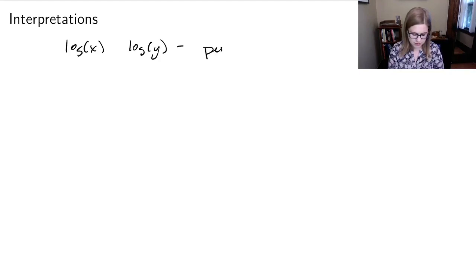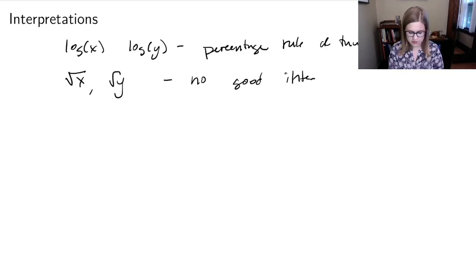So if you have a log of x or log of y, you can use the percentage rule of thumb. But if you have like square root of x or square root of y, there's no good interpretation. It becomes less easy to explain to someone. And if you do x squared or x cubed, anything like that, that's why we use the log the most frequently, just because it has such a nice interpretation.